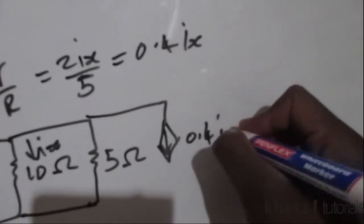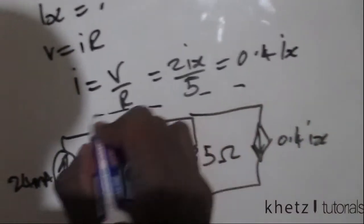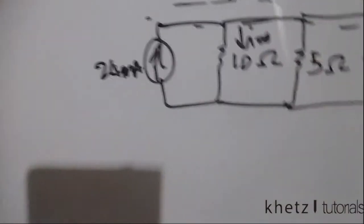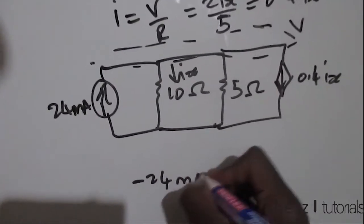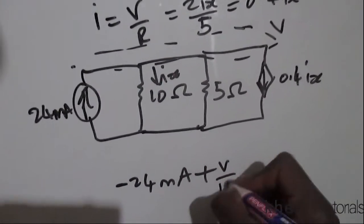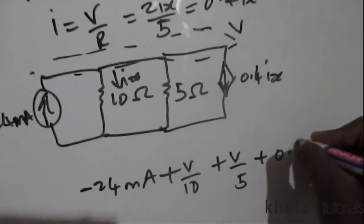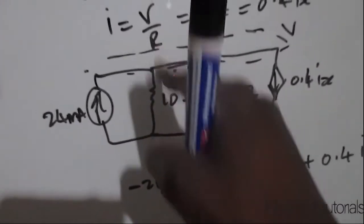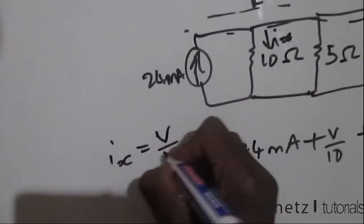Of value 0.4ix. Now everything at the top is now one node which we can call v. Doing some nodal analysis, we are going to have -24mA + v/10 + v/5 + 0.4ix = 0. But what is ix? If we check, ix is actually v/10.